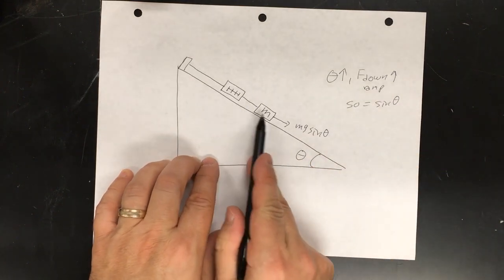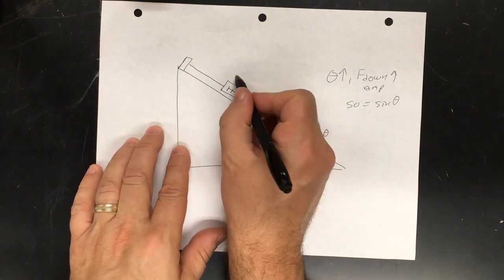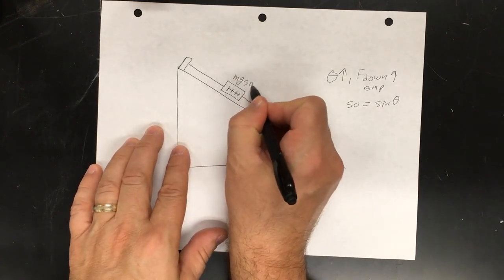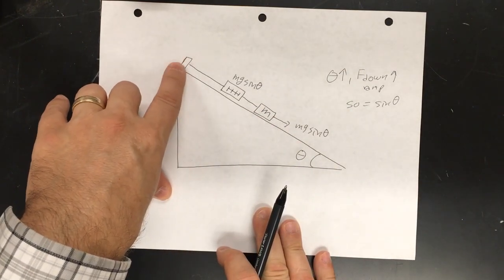Then, in order to keep this from moving, the tension in the rope must be mg sine theta. All the way up until you get to that point right there, which must pull with mg sine theta as well.